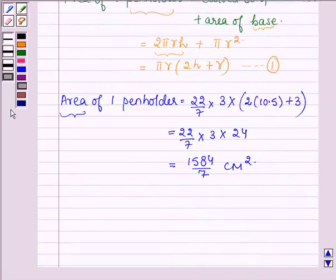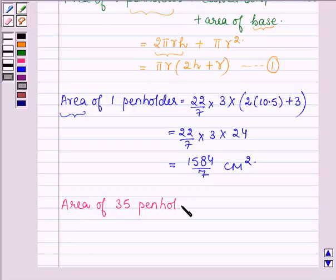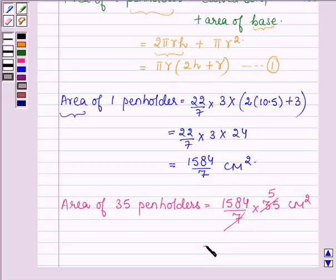Now we have to find area of 35 pen holders. So area of 35 pen holders equals 1584/7 × 35 cm², which gives 7920 cm².